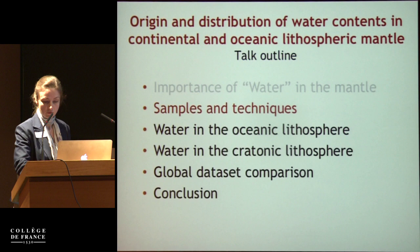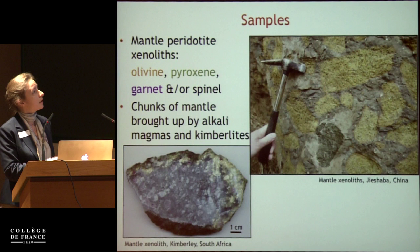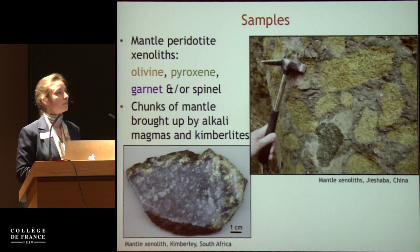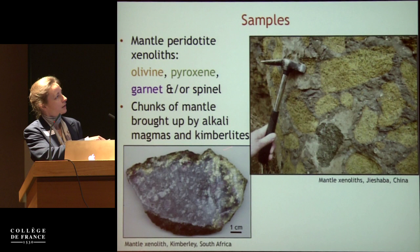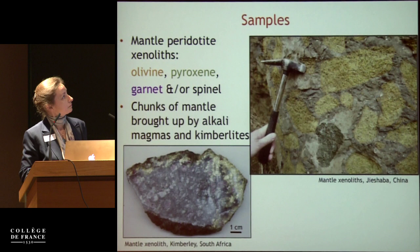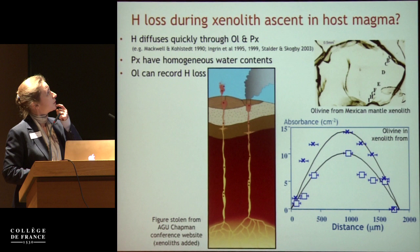What type of samples do I work with? I work with peridotites and a lot with mantle xenoliths — little chunks of mantle that some lavas pick up on their way up through the mantle and bring pretty much intact to the surface. These lavas are typically alkaline magmas, and in cratonic settings they are more like kimberlites.